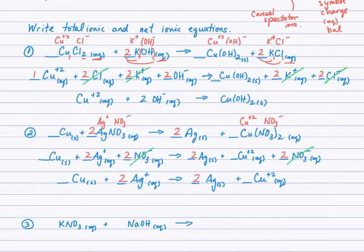Canceling spectator ions: only the nitrate ion is a spectator here. Notice that copper is a neutral solid on the left and an aqueous ion on the right, while silver is an aqueous ion on the left and a neutral solid on the right — so those are not identical and are not spectators. For an ion to be a spectator, it must be symbol, charge, AQ on both sides, correctly balanced.